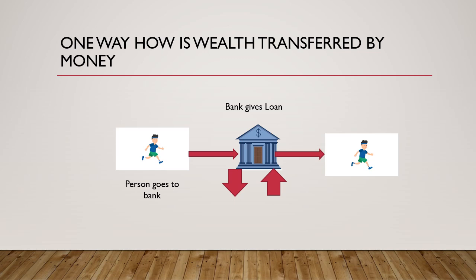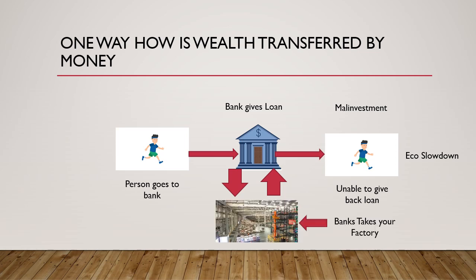Now, how is wealth transferred from one person to another, one sector to another, or even one country to another using money? In one scenario, a person takes a loan but is unable to return it due to malinvestment, bad business decisions, or a general economic slowdown. The bank then takes over the person's assets — say, a factory — and sells it at a lower price to a third party to recover its credit. In essence, wealth has transferred from this person to that third party.